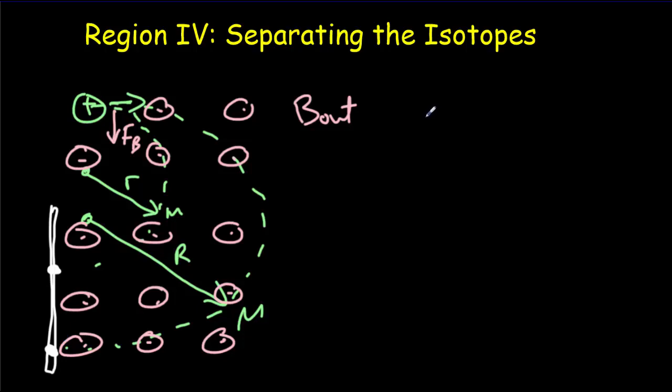Now, all we have to do is the most common thing that we do in this course, and that is apply Newton's second law. We say that the net force, or the sum of the forces, is equal to the mass times the acceleration. Well, there's only one force acting, and that's the magnetic force, QVB. And that's got to equal the mass times the acceleration, but in this case, we've got uniform circular motion. So our acceleration will be given by V squared over R.